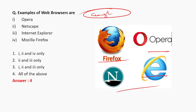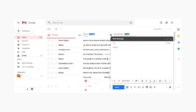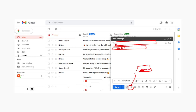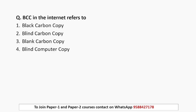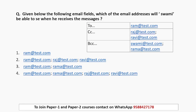यहाँ एक previous year question है जिससे idea होगा कि किस topic से कैसे questions आते हैं। Email एक professional तरीका है किसी एक जगह से दूसरी जगह mail करने का और files transfer करने का। Email में 'To' में उस person का email ID होता है जिसे mail भेजना है, 'Subject' में topic होता है। BCC का मतलब होता है Blind Carbon Copy और CC का मतलब होता है Carbon Copy — यह भी exam में पूछा जा सकता है।